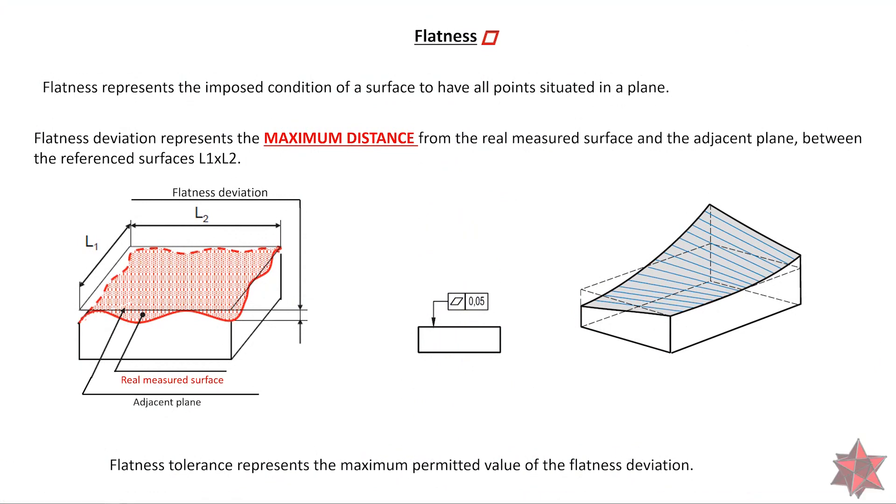Flatness represents the imposed condition of a surface to have all its points situated in a plane. Flatness deviation represents the maximum distance from the real measured surface and the adjacent plane. This is the flatness deviation, this is the real measured surface, and this is the adjacent plane right here.